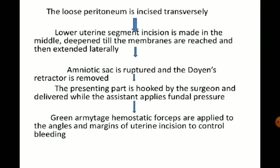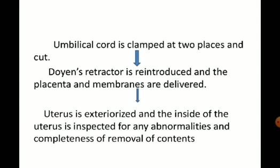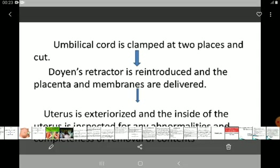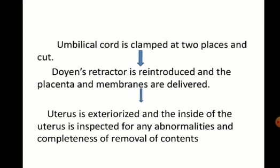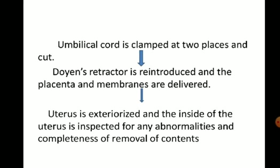Green Armitage hemostatic forceps are applied at the margins if there is more bleeding to temporarily stop it. The umbilical cord is clamped at two places and cut. The baby is handed to the pediatrician, the Doyen's retractor is removed, and the placenta and membranes are removed immediately. The uterus is exteriorized — kept on the abdomen — and the inside of the uterus is inspected for any abnormality and completeness of removal of contents.